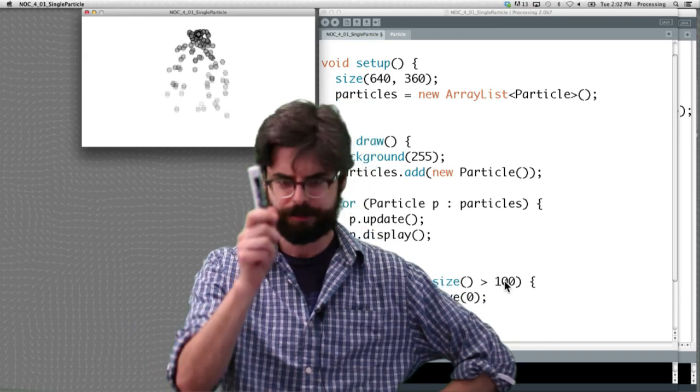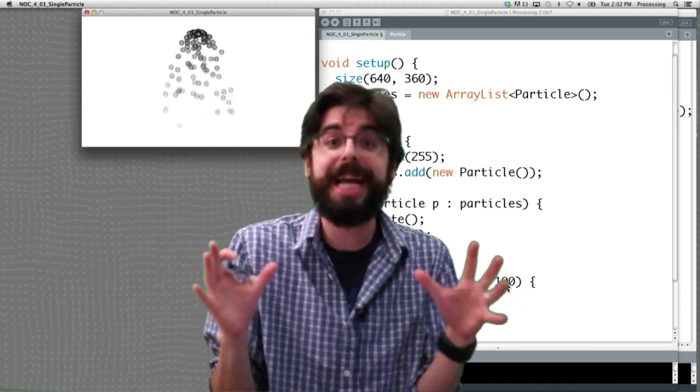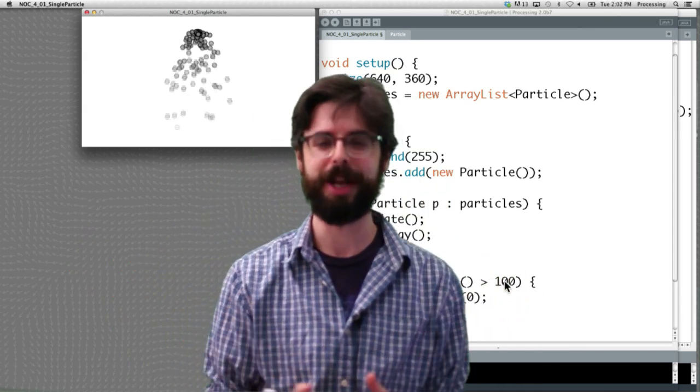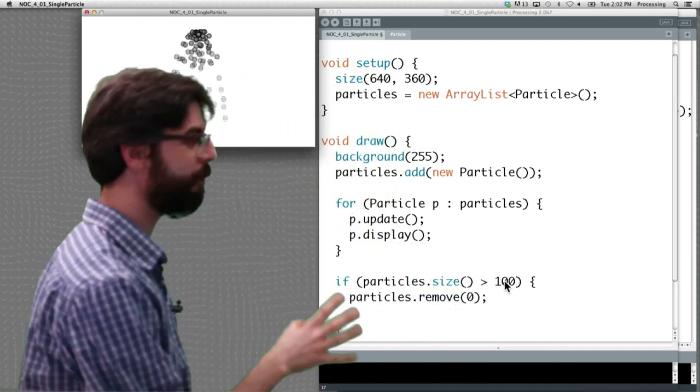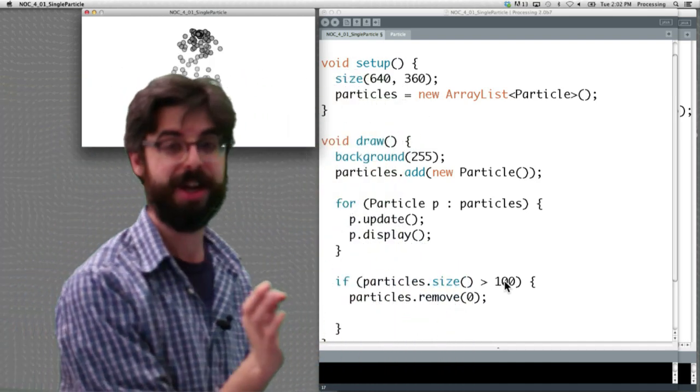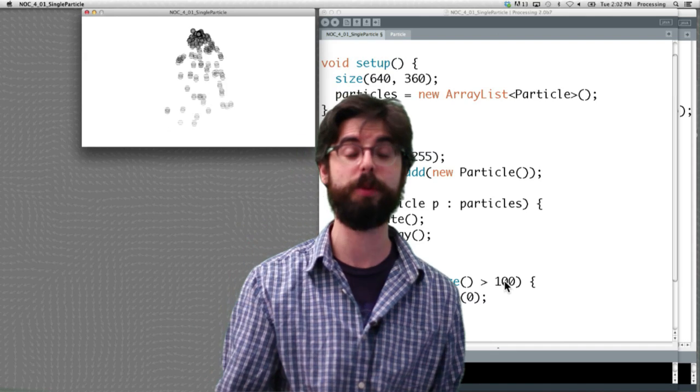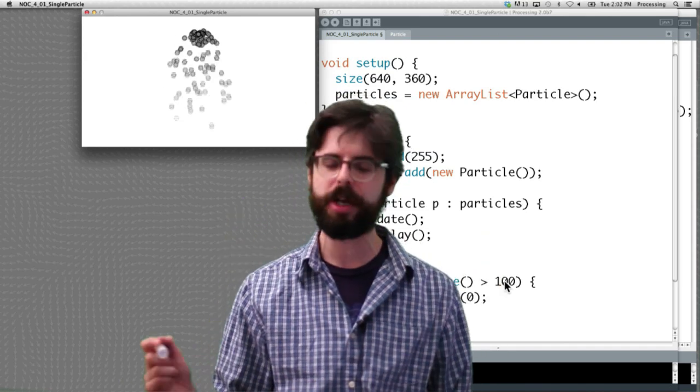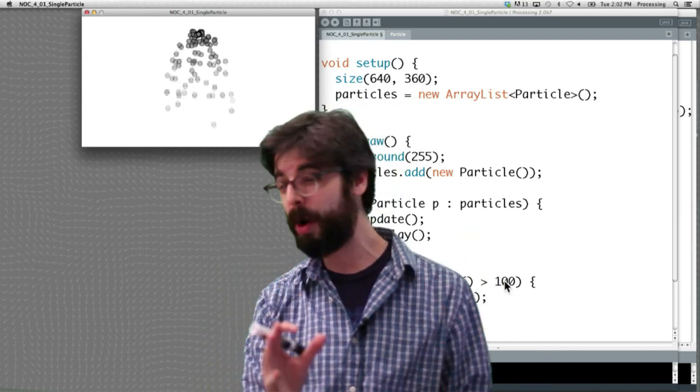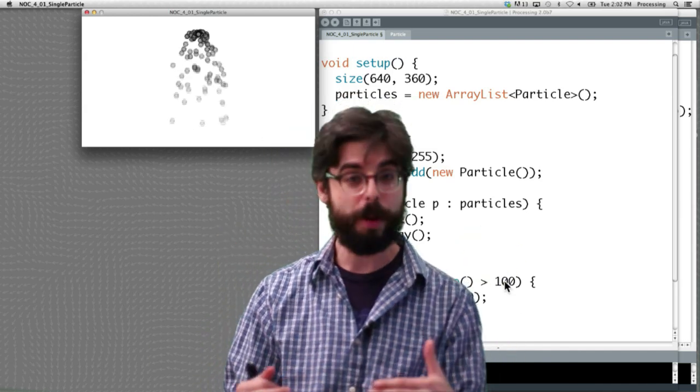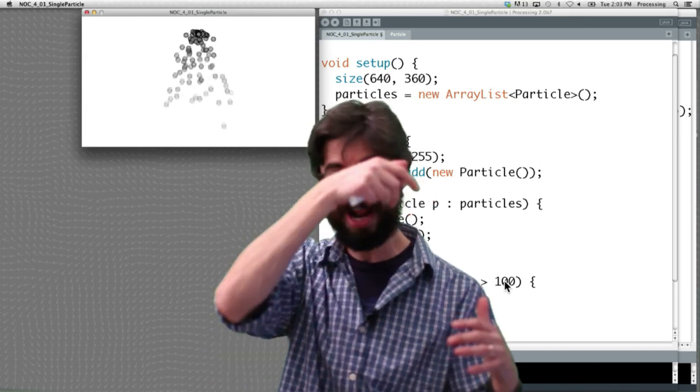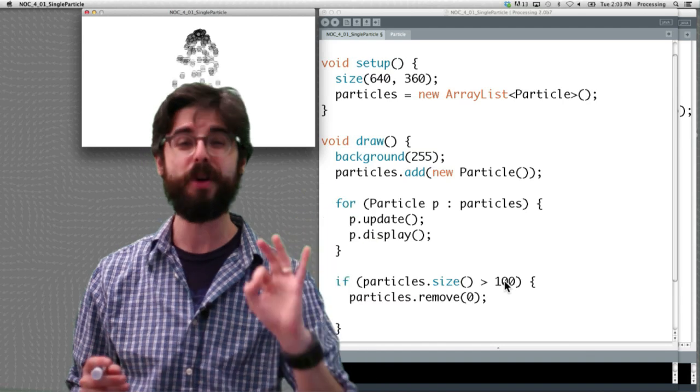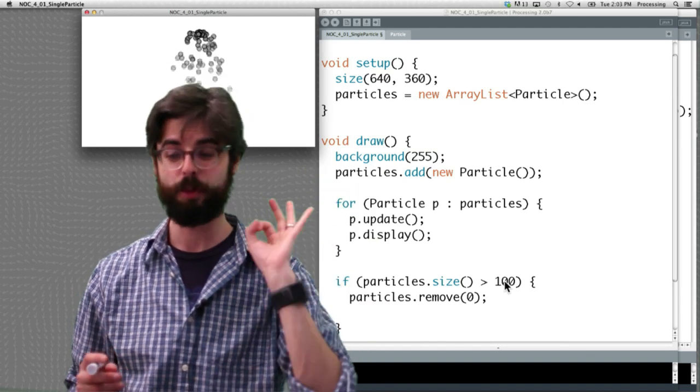This is not the implementation we're going to use in our first particle system example that we're building. What we actually want to do is something different. We want to say when a particle is finished, remove it. So it's not about just saying we can only have 100. We might say only the particles on the screen let's keep. Only the particles whose alpha hasn't faded away let's keep.